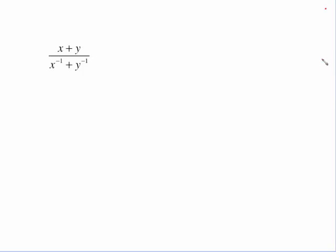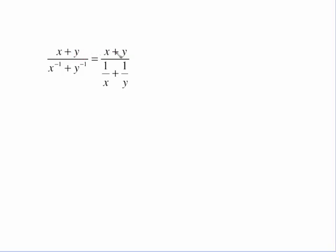This next one is a little more complicated because we have negative exponents. Remember that x to the negative 1 is 1 over x, and y to the negative 1 is 1 over y — that's what this slide shows. We didn't rewrite the top because that part isn't a fraction. Now I need to find the common denominator: I have a denominator of x and a denominator of y, so the common denominator is the product xy. I'll multiply xy times everything, but I choose not to distribute the top — I'd rather write it as xy times the quantity (x + y).